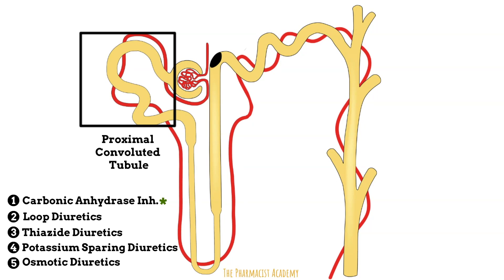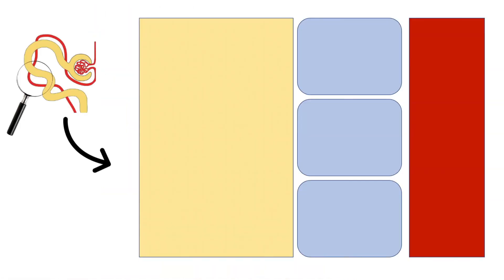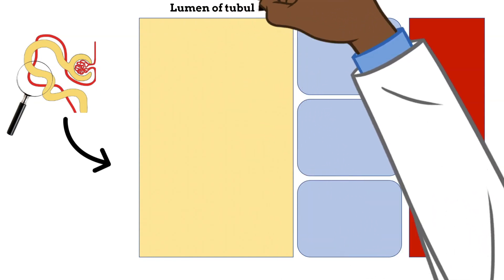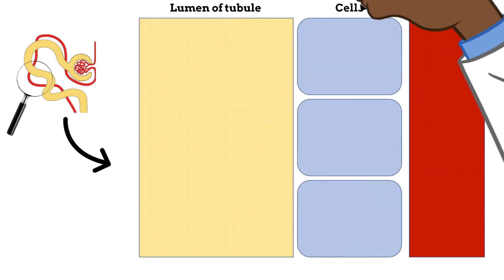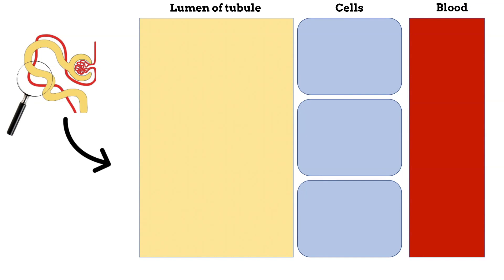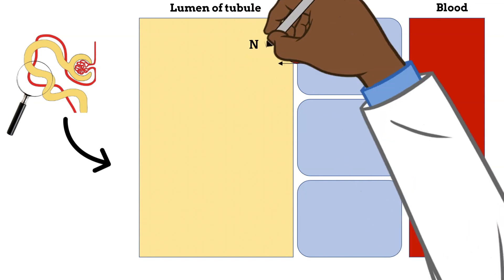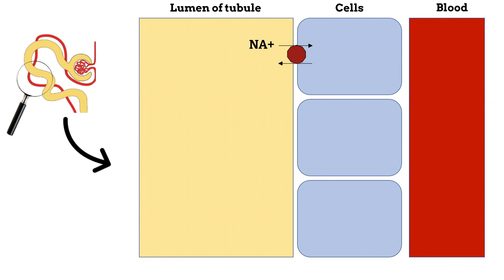Let's learn about what happens at the PCT in normal circumstances, and then what happens after we give a patient a carbonic anhydrase inhibitor, or CAI. Here is the PCT, and if we zoom in, this is how it looks. We have the inside of the tubule, the cells that line the tubule, and the blood. In normal circumstances, sodium is moved from the urine into the cells, and hydrogen ions are moved into the urine using a sodium-hydrogen ion exchanger.